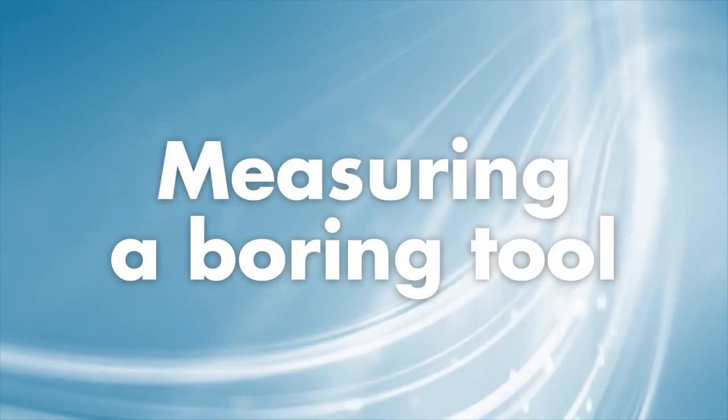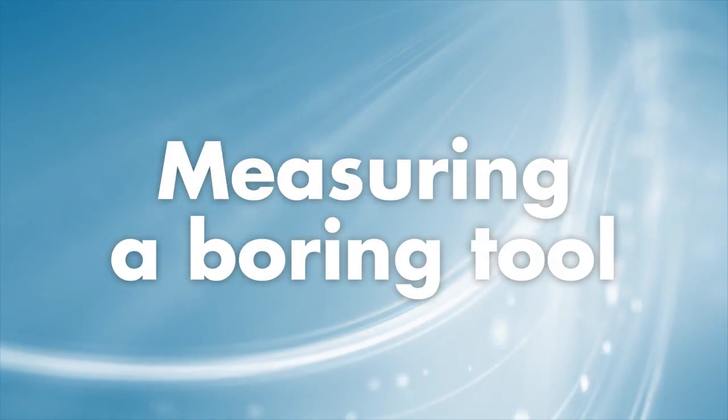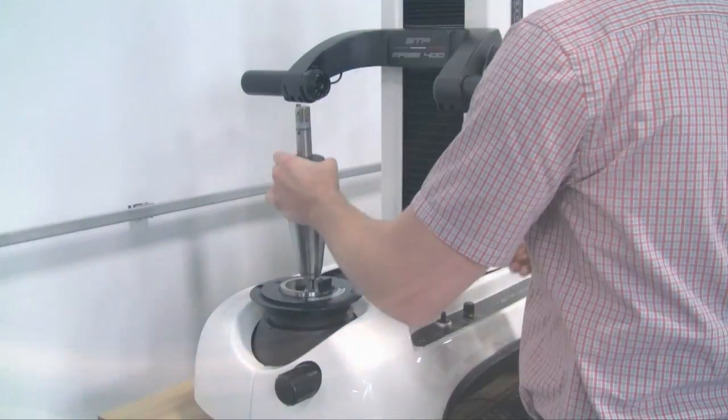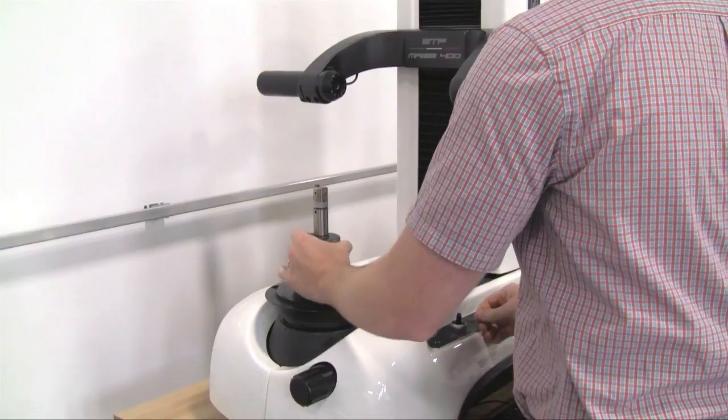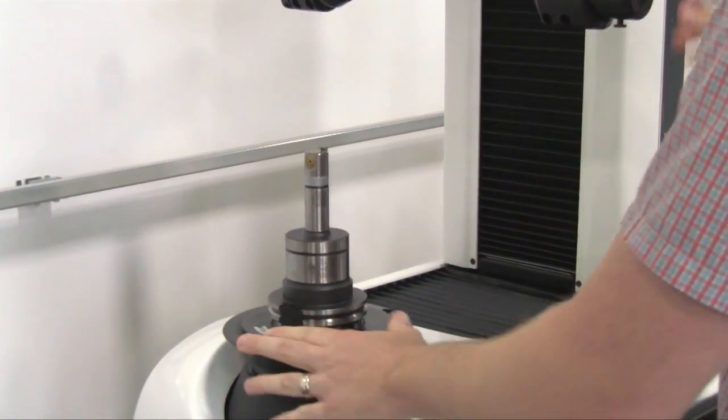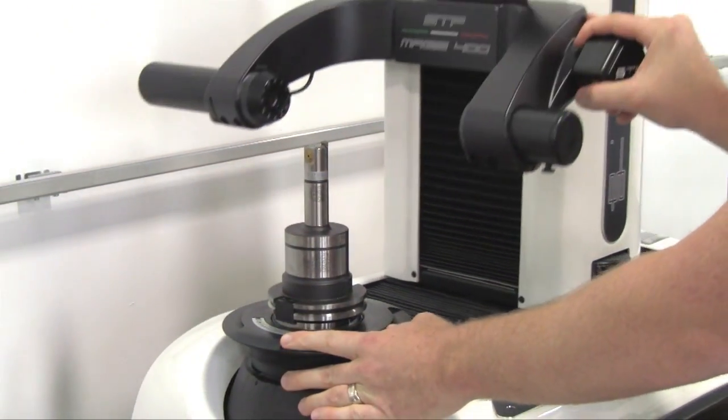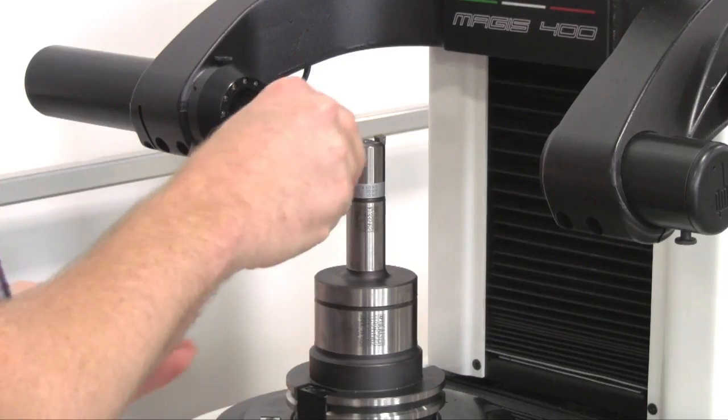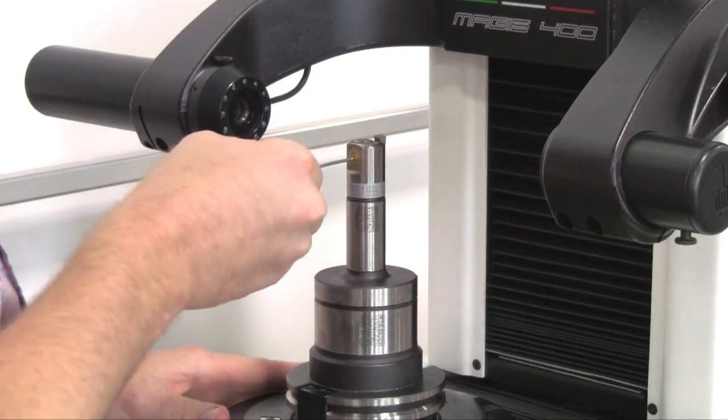Now that you are referenced correctly, you can measure commonly used tools such as Big Kaiser's single point finish boring tool. Start by inserting the tool into the spindle. Move the vision arm by depressing the rapid X and Z buttons so that the tool tip is in view of the measuring window. Manually rotate the tool to focus the cutting edge.